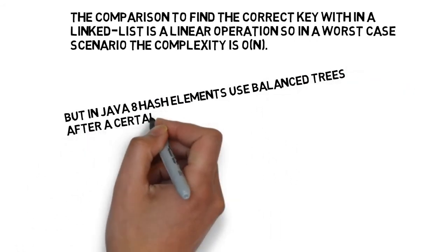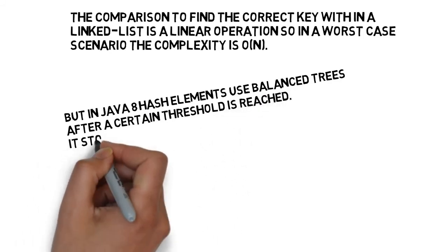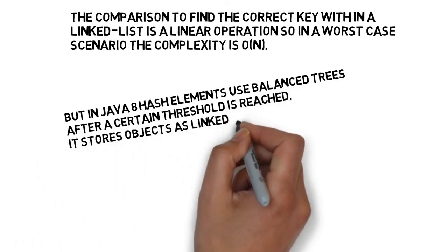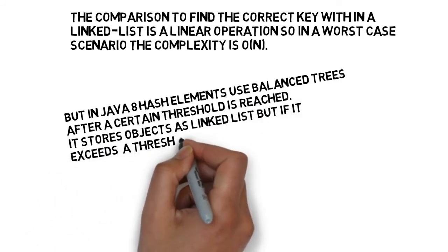But in Java 8, hash elements use balanced trees after a certain threshold is reached. It stores objects as linked list, but if it exceeds a threshold then it switches to balanced tree which improves performance from O(N) to O(log N).